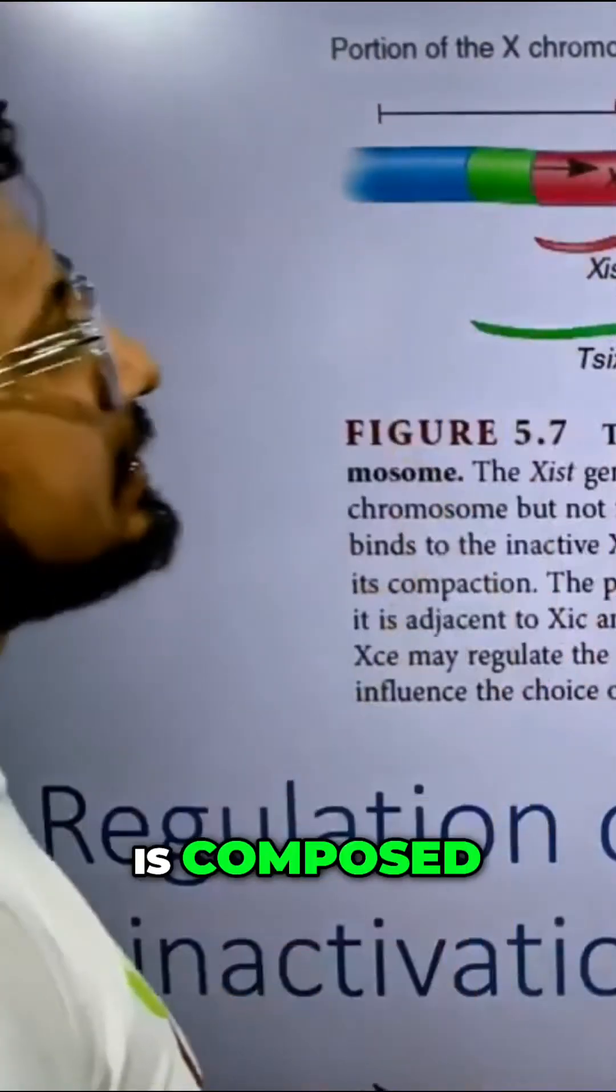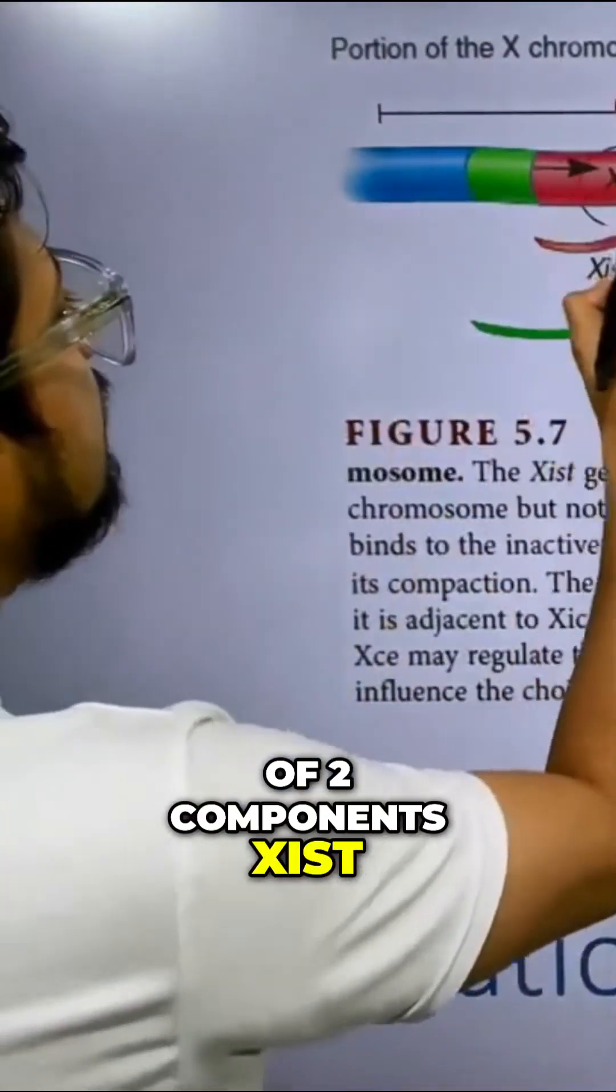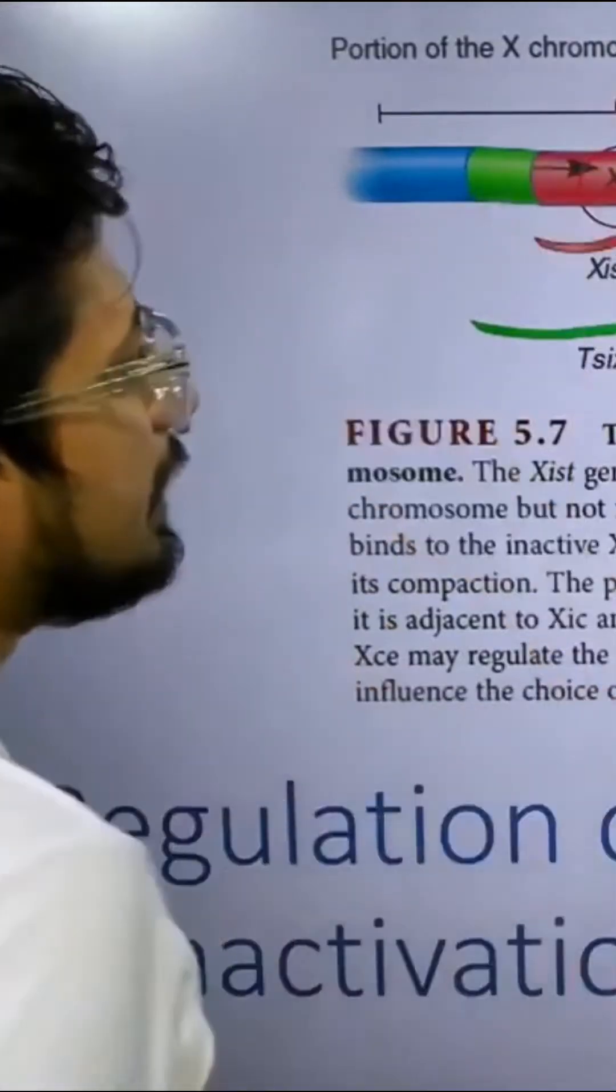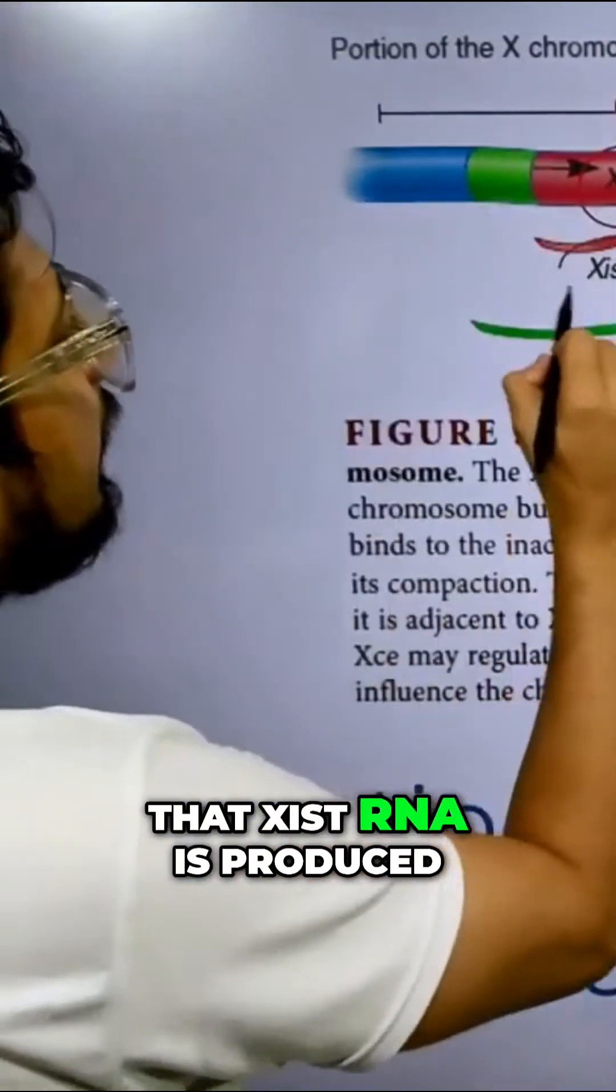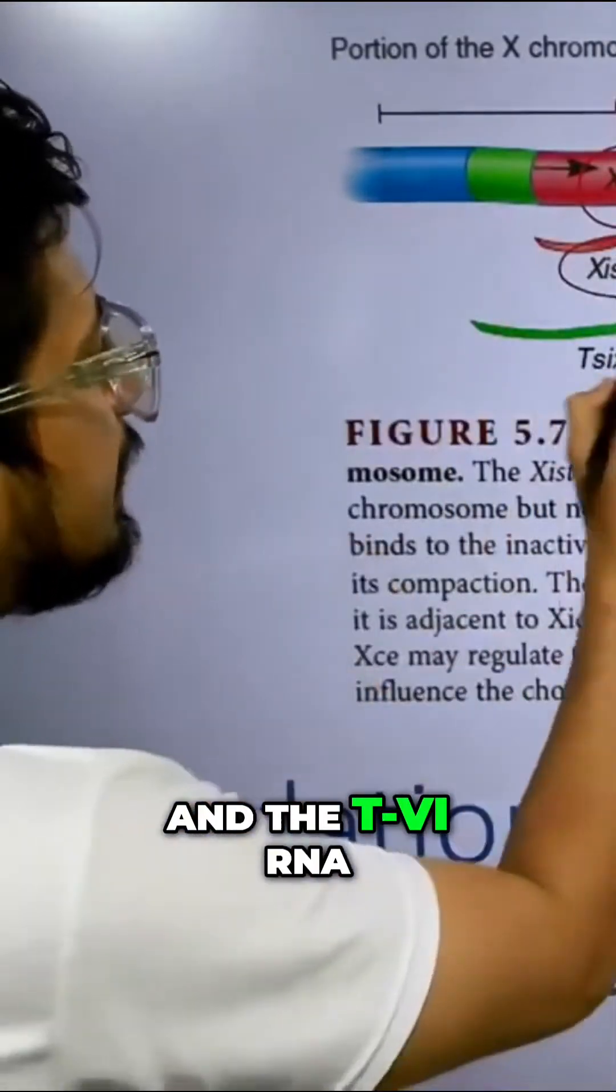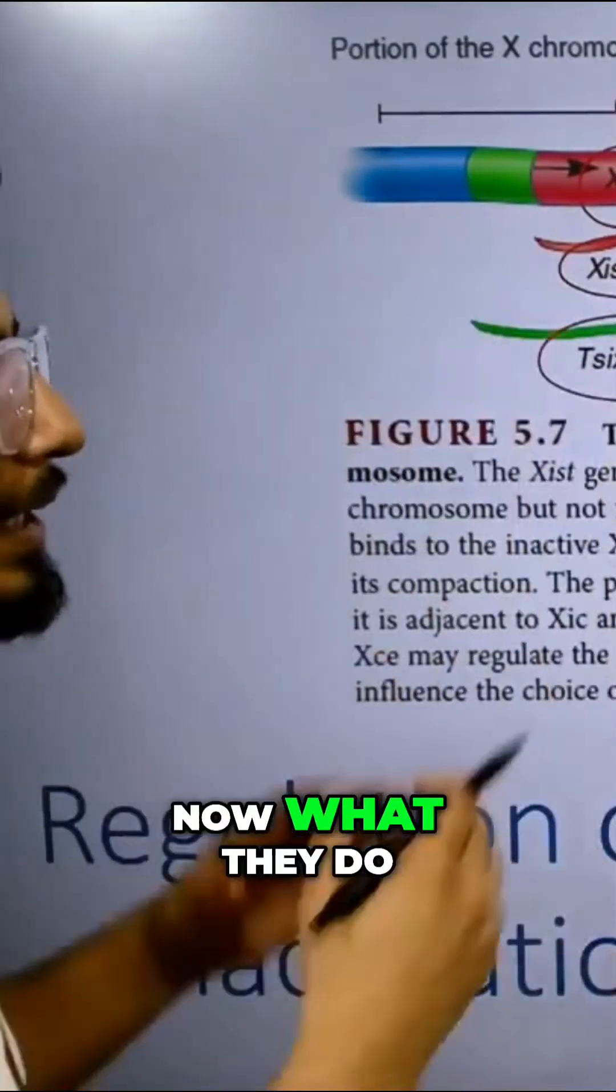And this X IC region is composed of two components, Xist and T6. Now the idea is that Xist RNA is produced and the T6 RNA is also produced.